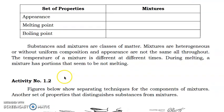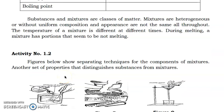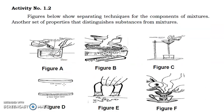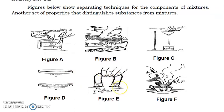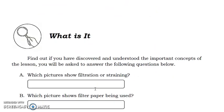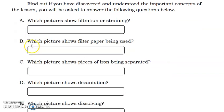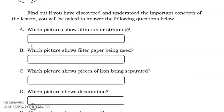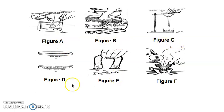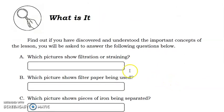Then, let's proceed with another activity. So, under pa rin ito ng what is it. So, third activity. So, given here are the figures showing the separating techniques for the components of mixtures. So, we have figure A, figure B, figure C, D, E, and F. So, analyze po nang mabuti yung mga figures or diagrams on your module. And then, for the third activity, answer the following question. So, your answer must be the letters referring to the figure.